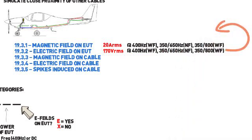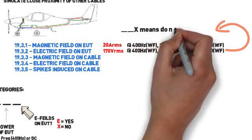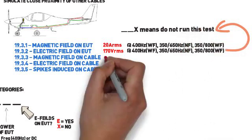However, E-fields will not be run if X is marked as the third letter of your category.